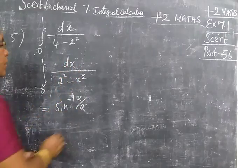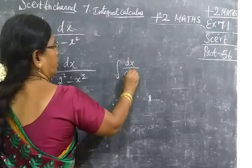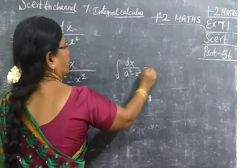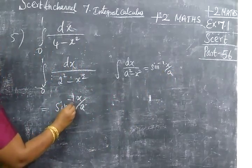Dx by a square minus x square integral. Dx by a square minus x square equal to sin inverse x by a. So similarly you are writing,